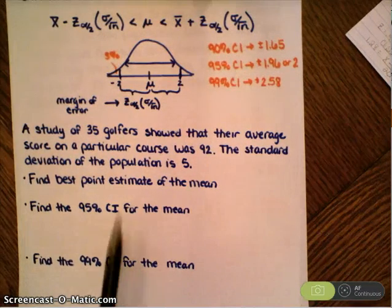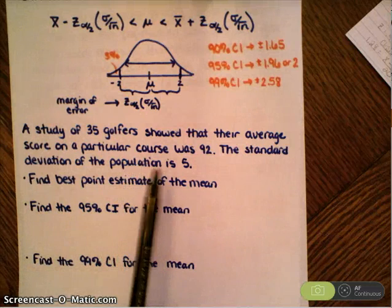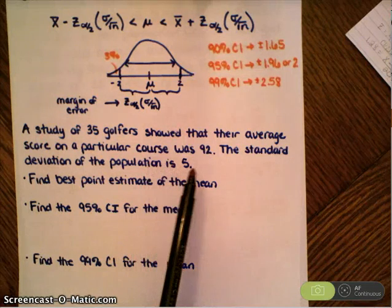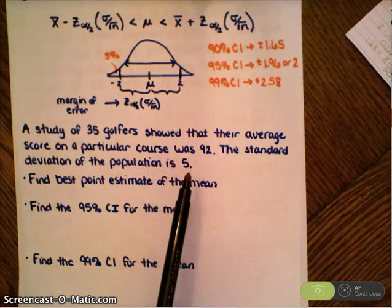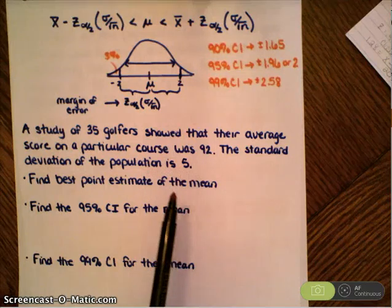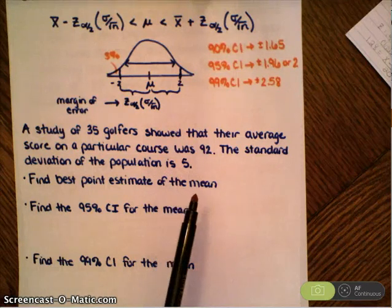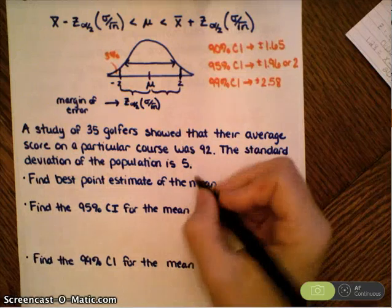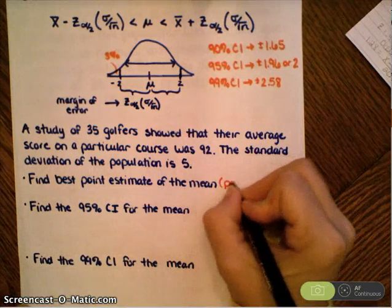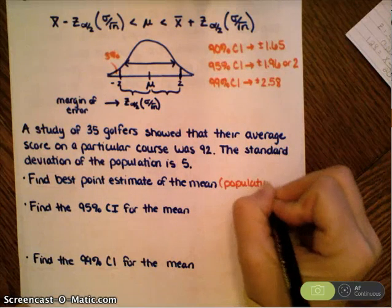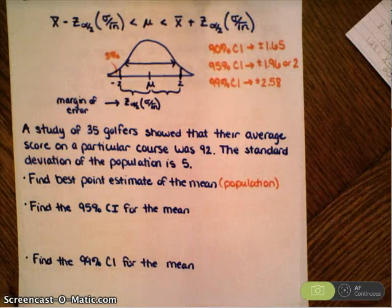In this particular case, a study of 35 golfers showed that their average score on a particular golf course was 92. The standard deviation of the population is 5. First, what's the best point estimate for the mean? Actually, what I should put here is the population mean.